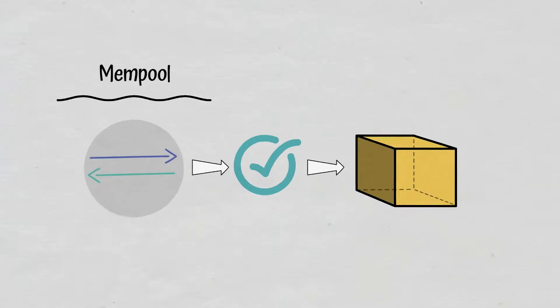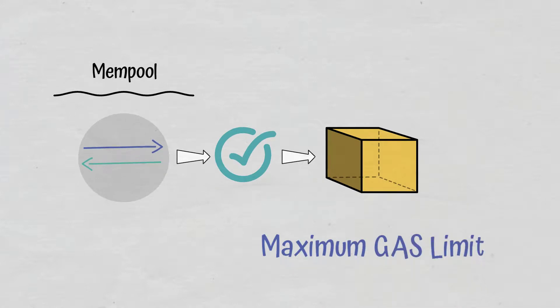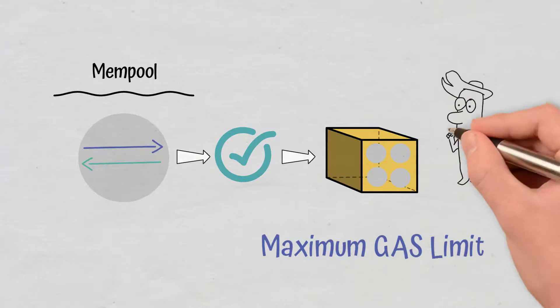This is also where a factor called maximum gas limit comes in, that is, a predetermined number of transactions that can be included in a block. Therefore, depending on this limit, miners cannot exceed the number of transactions.